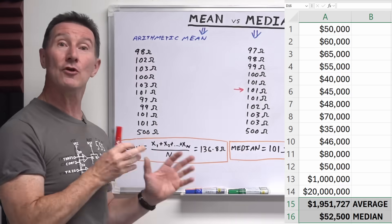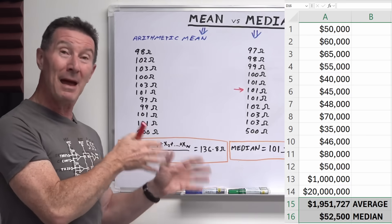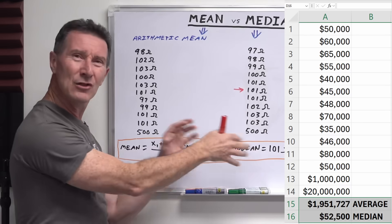That's why the median is used for house prices, it's used for wages and other things that really matter to people, where you can get a lot of outliers.